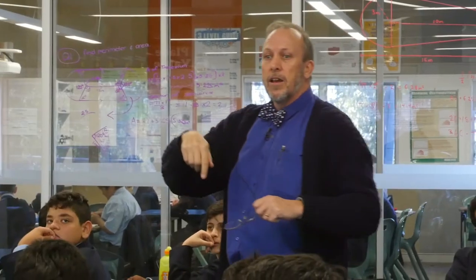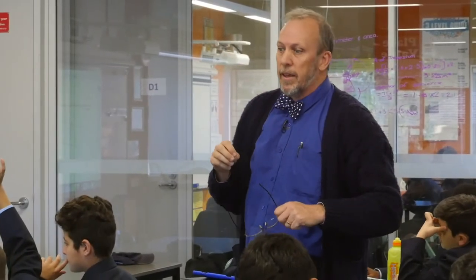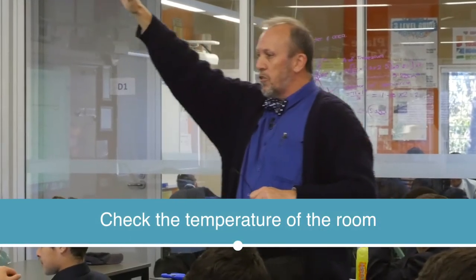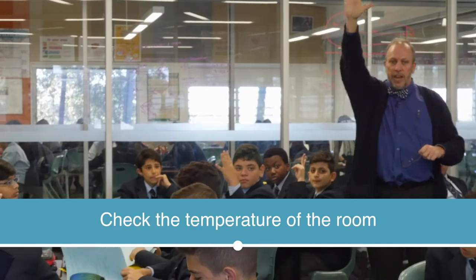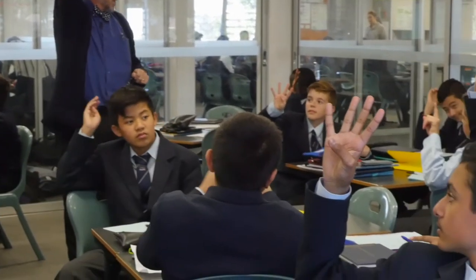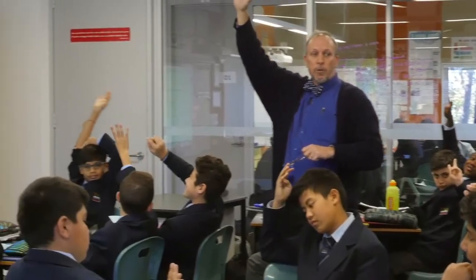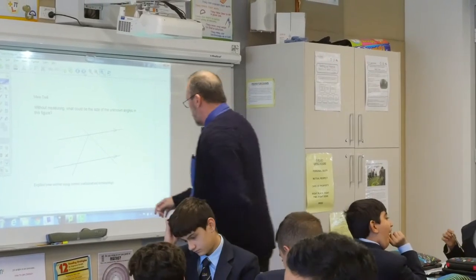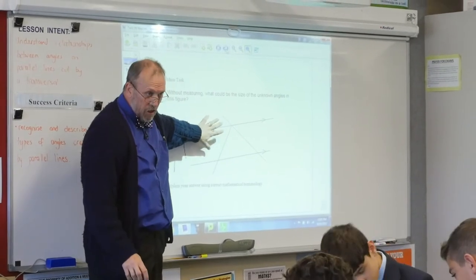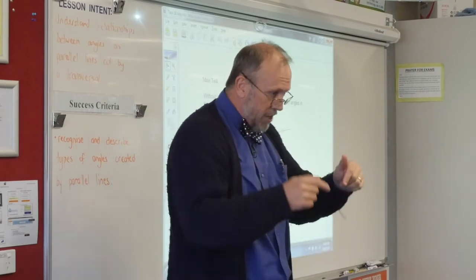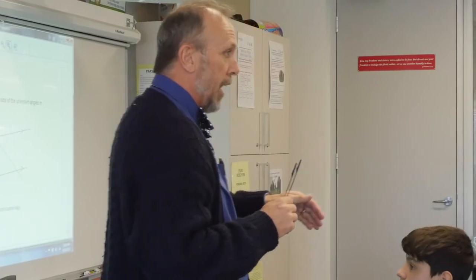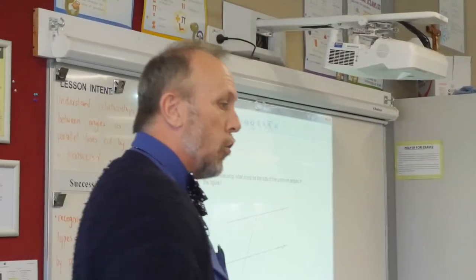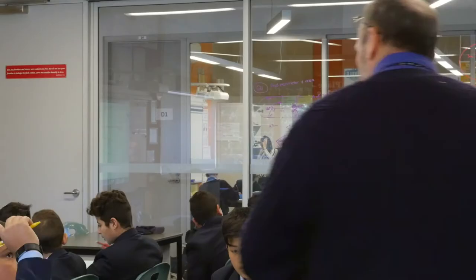We had a sheet in the last lesson which had some information about these types of angles - that's a good source. Give me a rating out of five, five being the most confident, one being the least, of how confident you are to do this task. Hold your hands up. People look like they're reasonably confident. Over the page you'll find some working space where you can play around and put any numbers you want. Underneath that you've got a space for your final working - it can be messy for the working copy, then do your final copy.